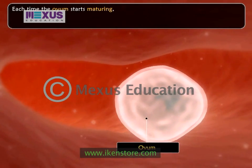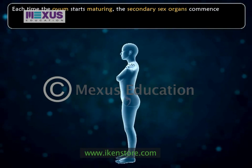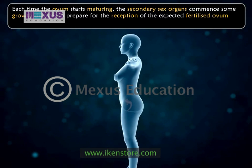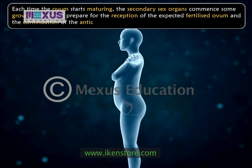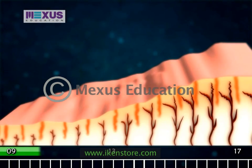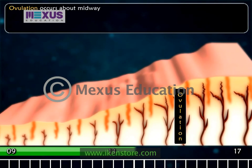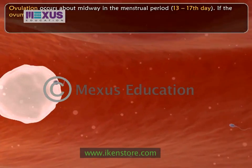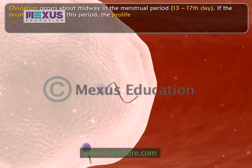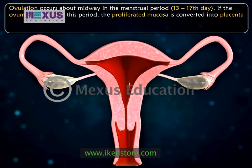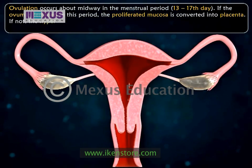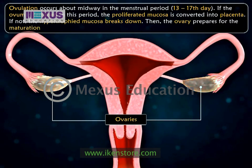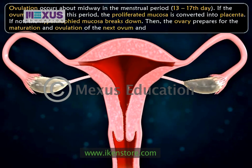Each time the ovum starts maturing, the secondary sex organs commence some growth changes to prepare for the reception of the expected fertilized ovum and the continuation of the anticipated pregnancy. Ovulation occurs about midway in the menstrual period, on the 13th to 17th day. If the ovum is fertilized in this period, the proliferated mucosa is converted into placenta. If not, the hypertrophied mucosa breaks down, then the ovary prepares for the maturation and ovulation of the next ovum, and the cycle continues.